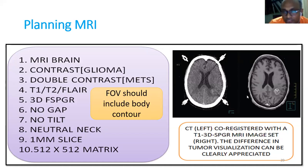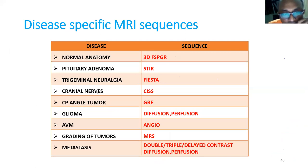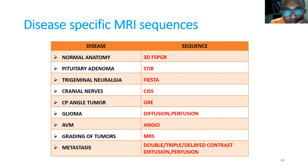The FSPGR sequence (also 3D FSPGR) is the best sequence to identify normal structures as well as tumor. For disease-specific MRI sequences: normal anatomy needs 3D FSPGR; pituitary adenoma needs STAR sequence; trigeminal neuralgia needs FIESTA sequence; cranial nerve needs CISS sequence; CP angle tumor needs GRE sequence; glioma needs diffusion and perfusion; AVM needs angio sequence; grading of tumor needs MRS; and metastasis needs double, triple, or delayed contrast with diffusion and perfusion.